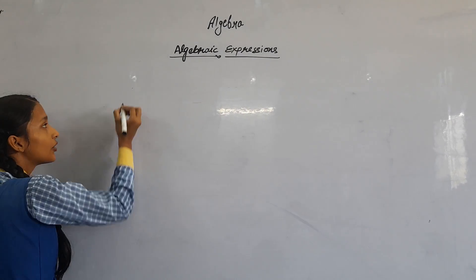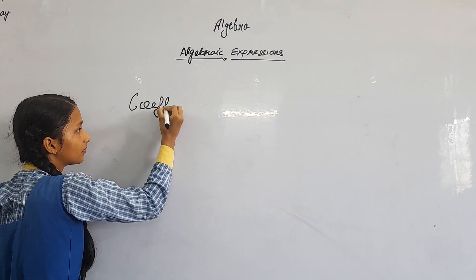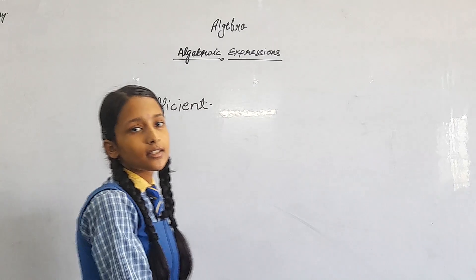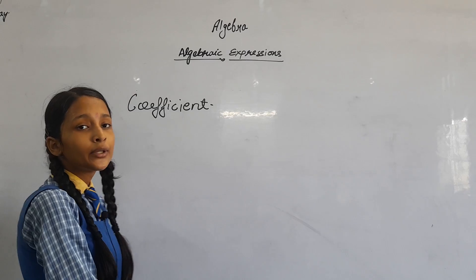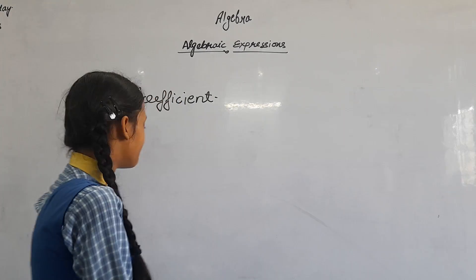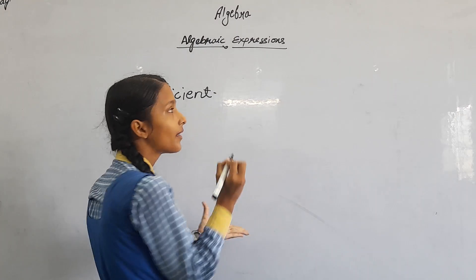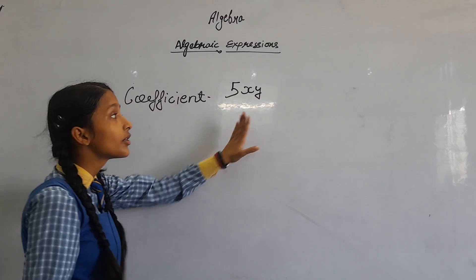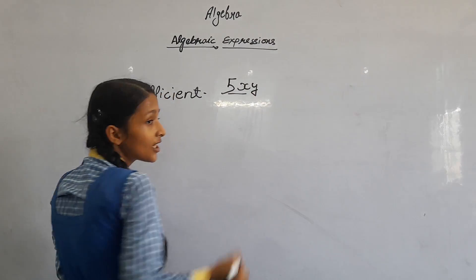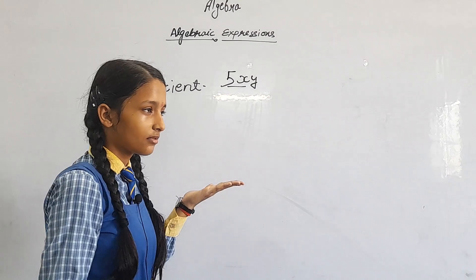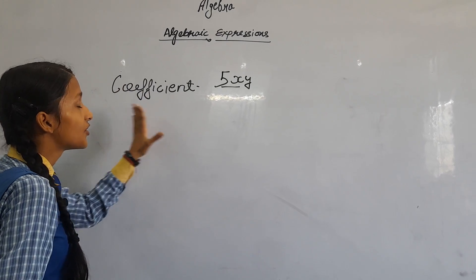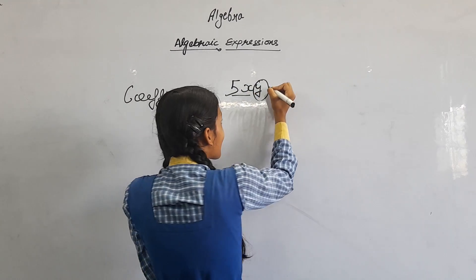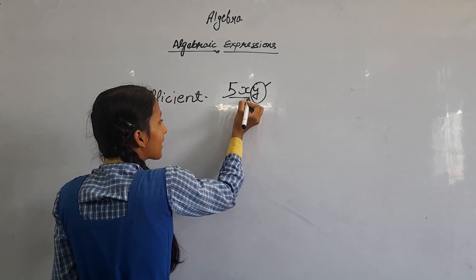We will come to our next topic: coefficient. The definition of coefficient is the remaining factors of a term are known as coefficient. If the question asks what is the coefficient of y, here we see 5xy. The remaining factors of a term are known as coefficient, so here 5x is the remaining factor. So the coefficient of y is 5x.